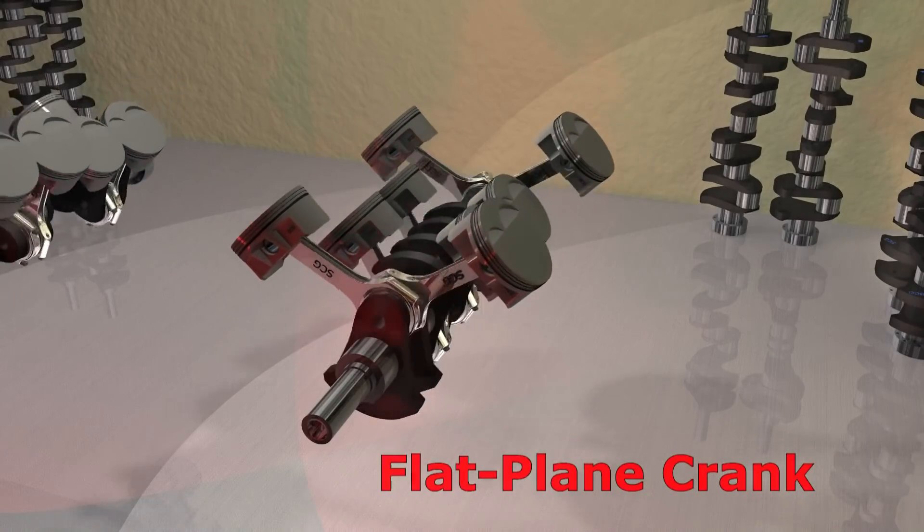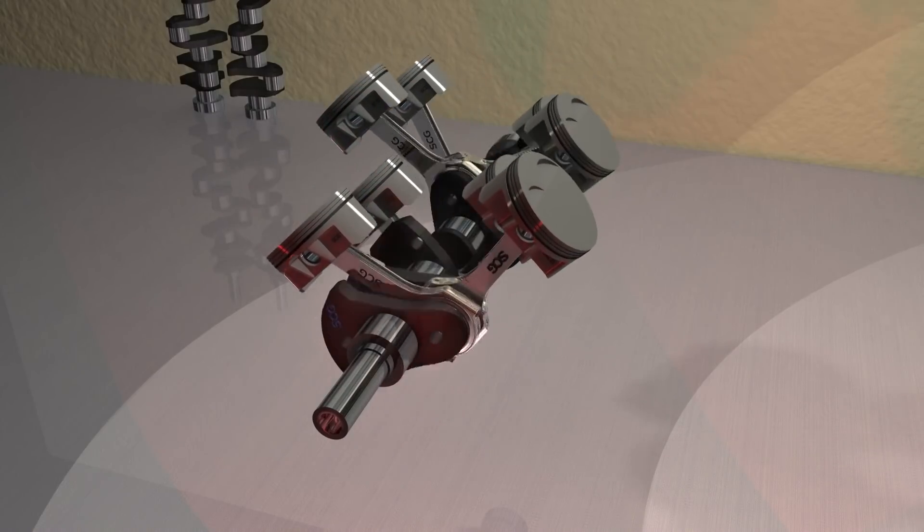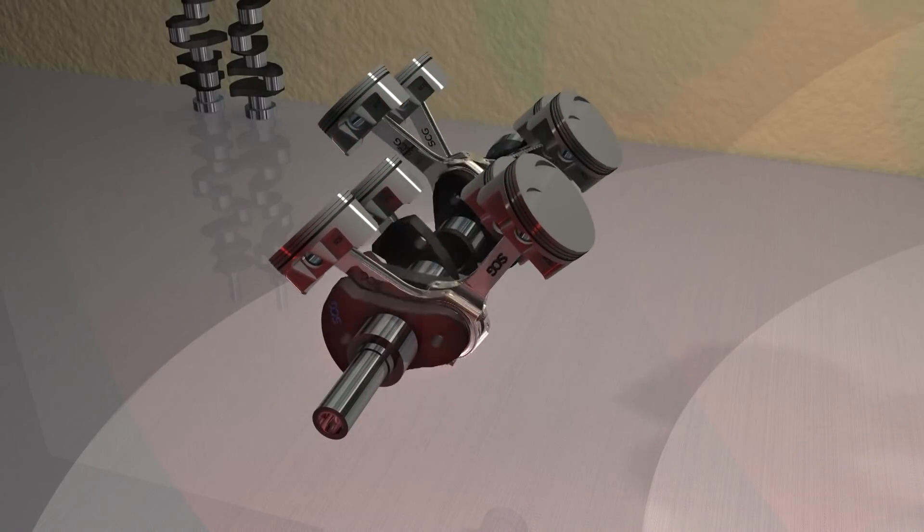So what is the difference between a flat and a cross? Let's look at the cross plane rotating assembly first: crank, pistons, and rods. Crankshafts get their name from the location of the rod journals. For the cross plane, one must look straight into the crankshaft head on.